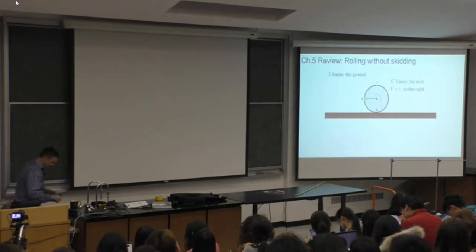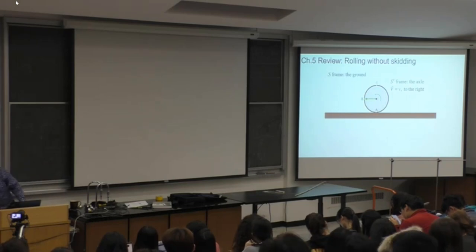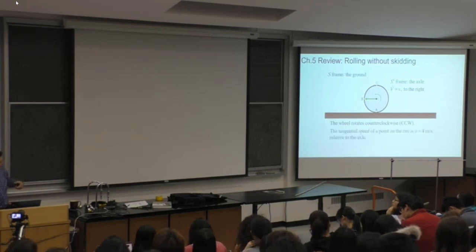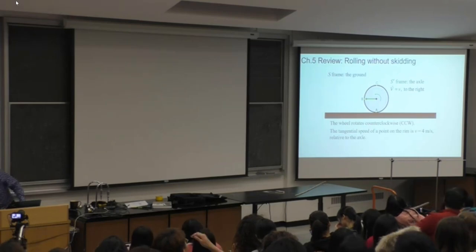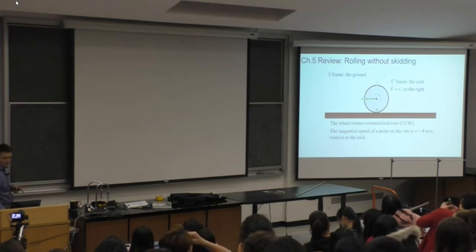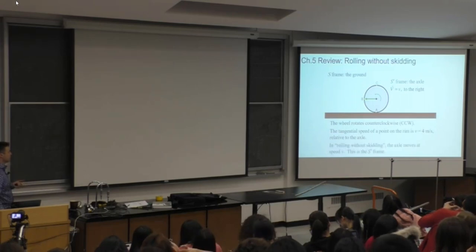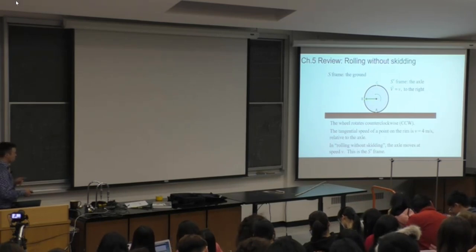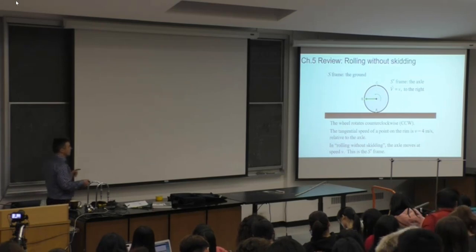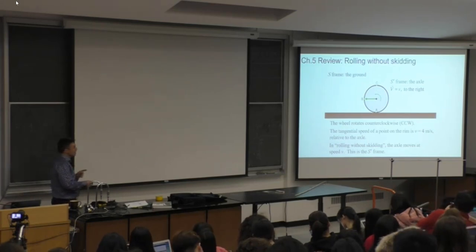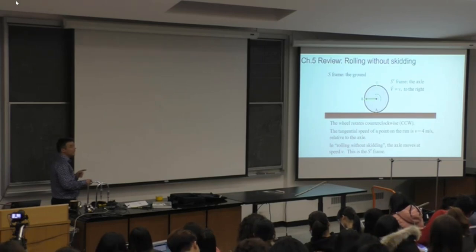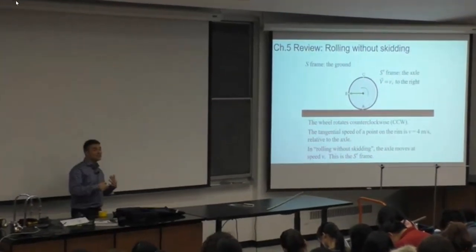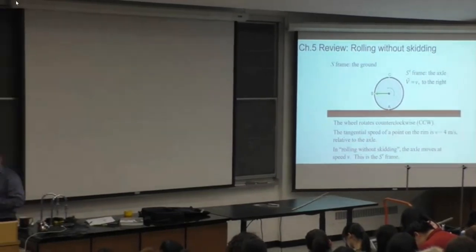This is the way I think of it. You've got a thing that's rolling without slipping. The wheel is rotating counterclockwise, and a tangential speed of any point on the rim relative to the axle is 4 meters per second. When rolling without skidding, the axle moves at that same speed. Whatever the tangential speed VT is of points on the rim relative to the axle, that also happens to be the velocity of the axle relative to the ground.